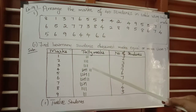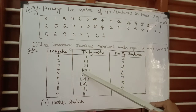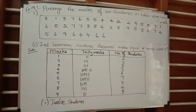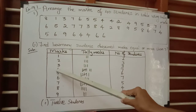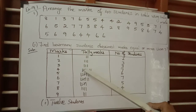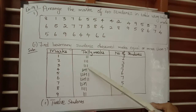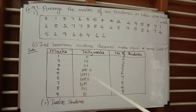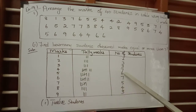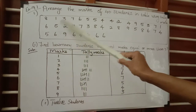For number four, count: one, two, three, four, five, six, seven — it has been repeated seven times. Tally marks is a group of five lines where the first four are vertical and the fifth is drawn diagonally over the previous four. So draw one, two, three, four, then the fifth line diagonally, then the sixth and seventh lines. The number of students for mark four is seven.